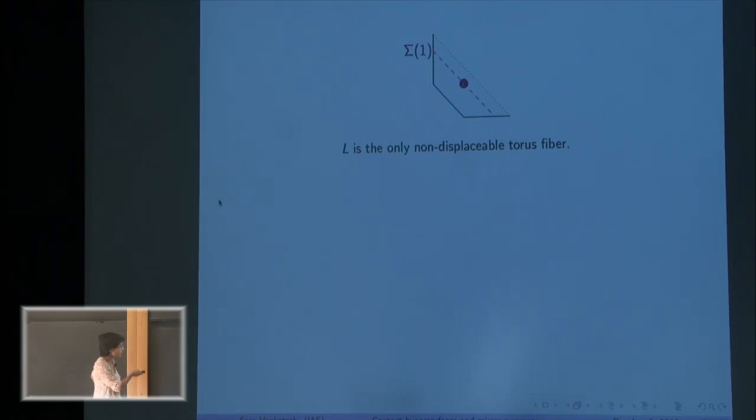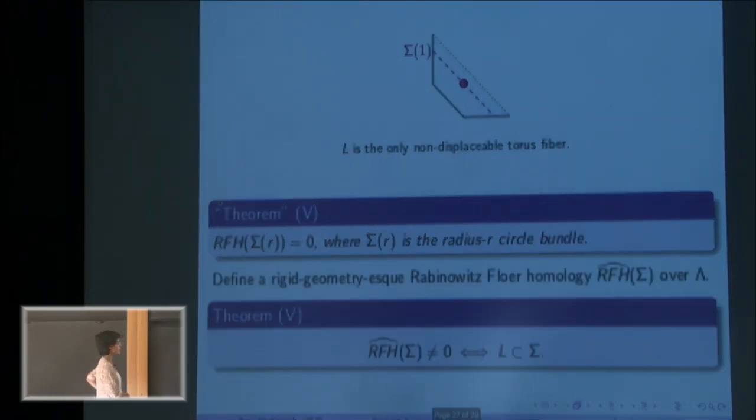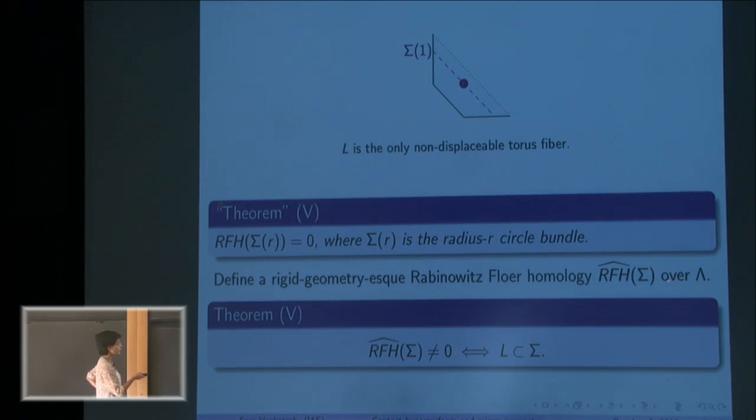And I had this result over C that said that my Floer theory vanished everywhere. But if I followed the intuition of the number theorists and I work over lambda in some non-trivial way, I actually get a Floer theory that detects this Lagrangian. I get a Floer theory that picks out this radius one sphere bundle and tells me there's something interesting happening on it.